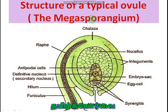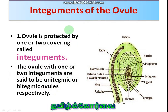The structure of a typical ovule — it is also called as Megasporangium. In order to understand the types of ovule, the following structures we are going to study: funiculus, hilum, raphe, chalaza, nucellus, integuments, embryo sac, and micropyle. These are the structures which are very important in order to understand the types of ovules.